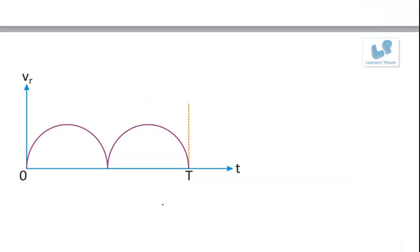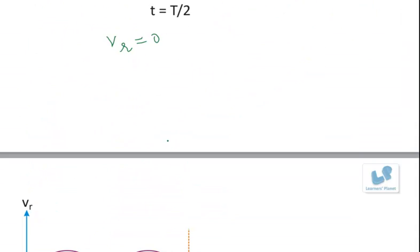So if we look at the four options that are given, the relative speed is 0 at t equal to 0, t by 2, and t - at no other point it is 0.